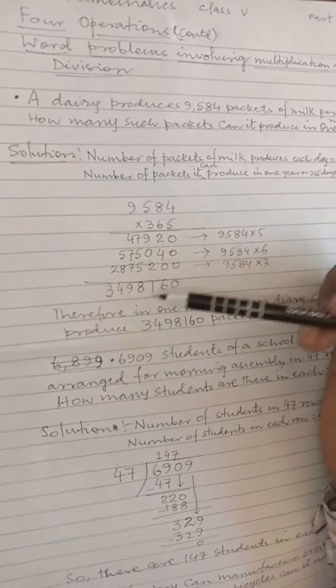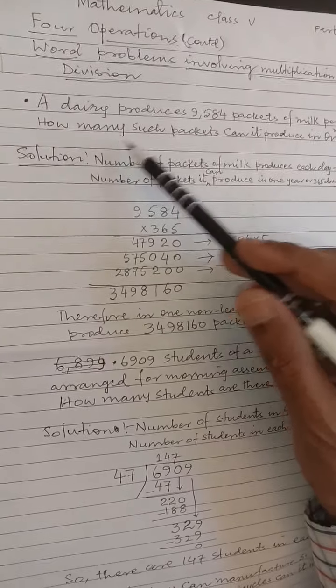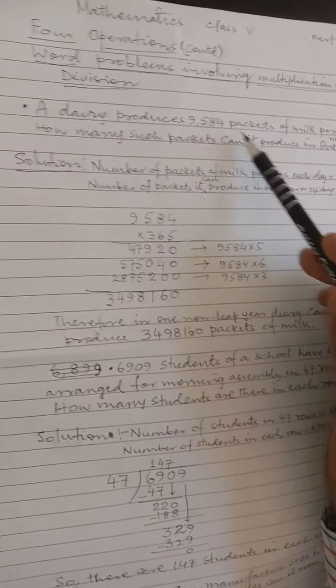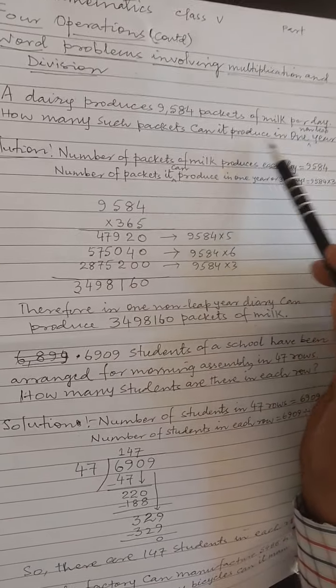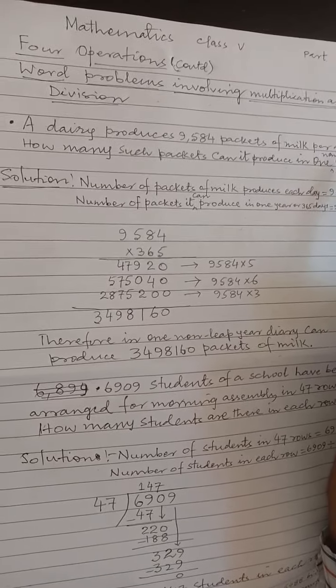We take an example. A dairy produces 9,584 packets of milk per day. How many such packets can it produce in one non-leap year?